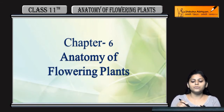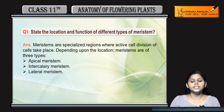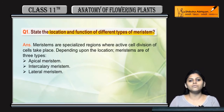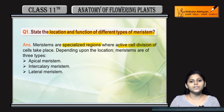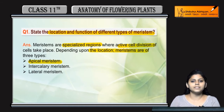Hello everyone, let's start with the question answers of chapter 6. The very first question is: state the location and function of different types of meristems. First of all, meristems kya hoti hai? Meristem is that specialized region jahaan pe active cell division hoti hai. Aur on the basis of location, meristems are of three different types: apical meristem, intercalary meristem, and lateral meristem.